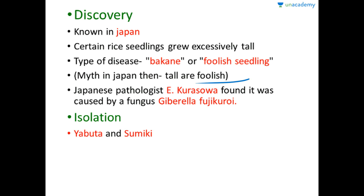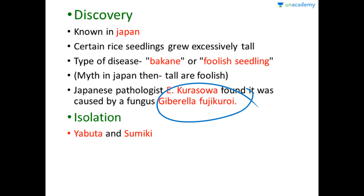Years later, a Japanese pathologist named E. Kurosawa found that this disease was actually caused by a fungus known as Gibberella fujikuroi. Since a fungus causes the disease by secreting some substance, that particular substance was extracted from Gibberella fujikuroi by Yabuta and Sumiki, which marks the isolation of gibberellins.